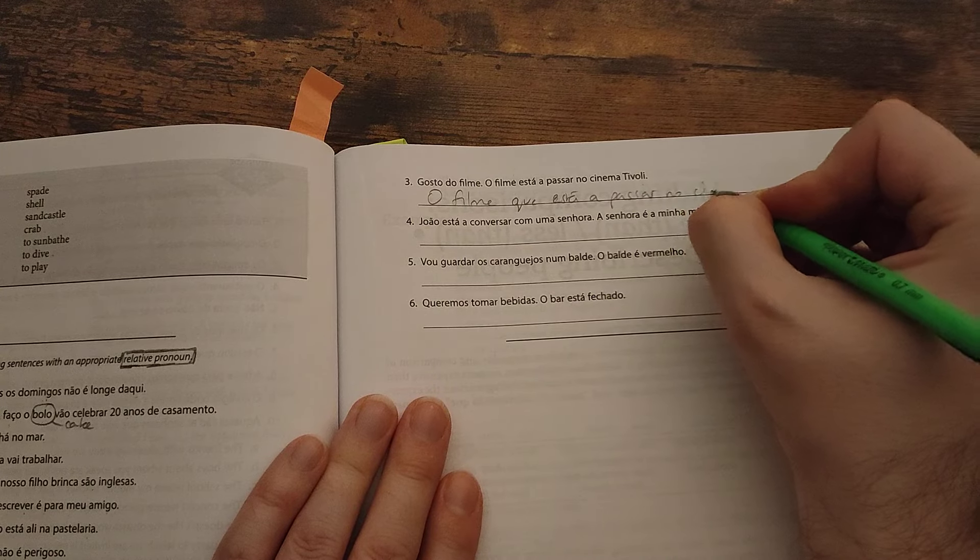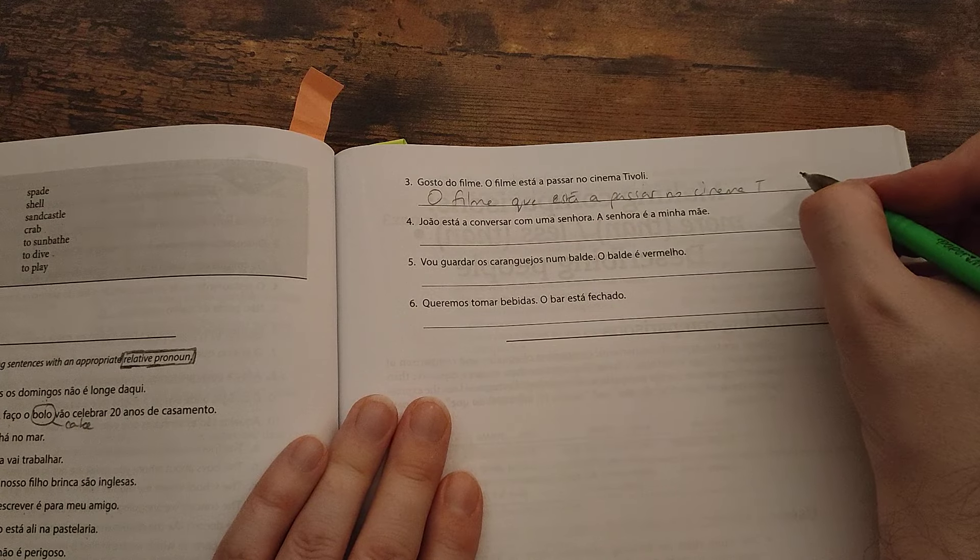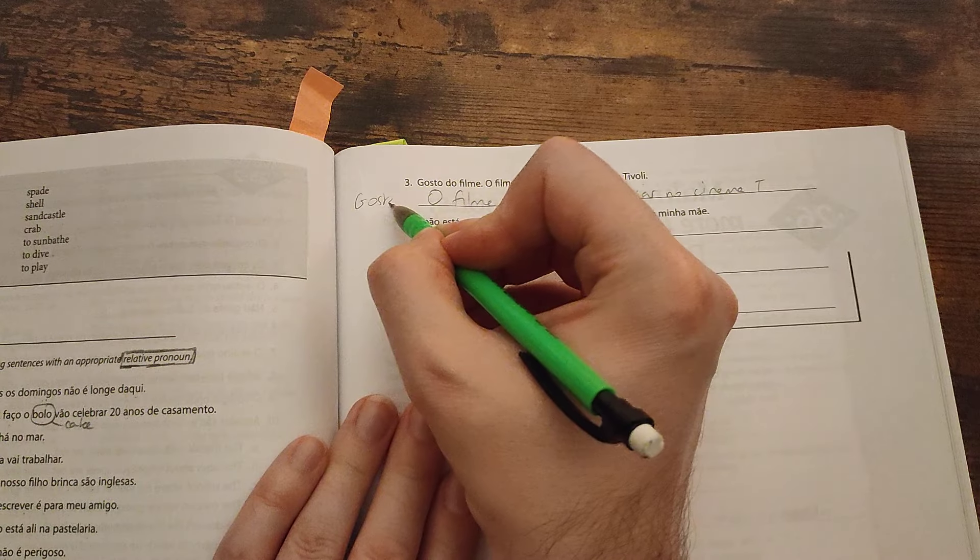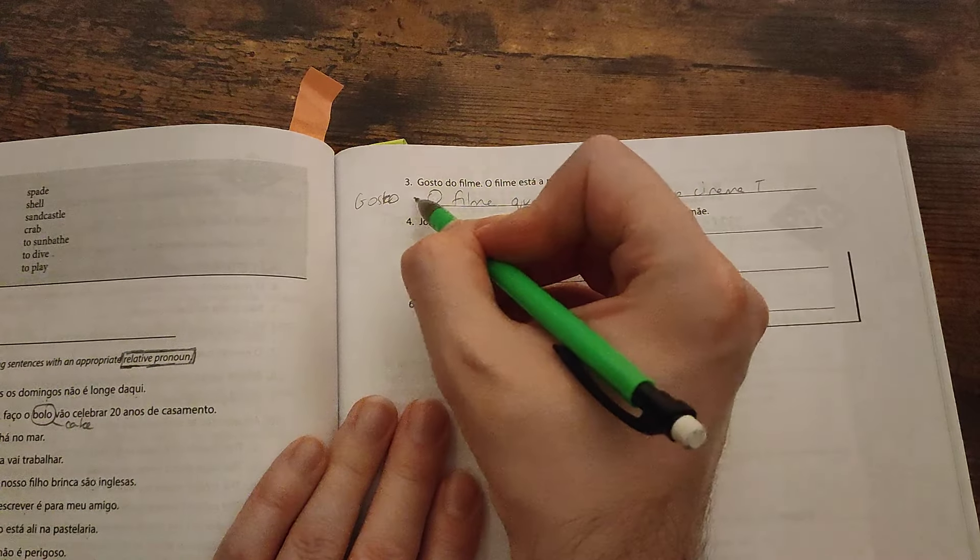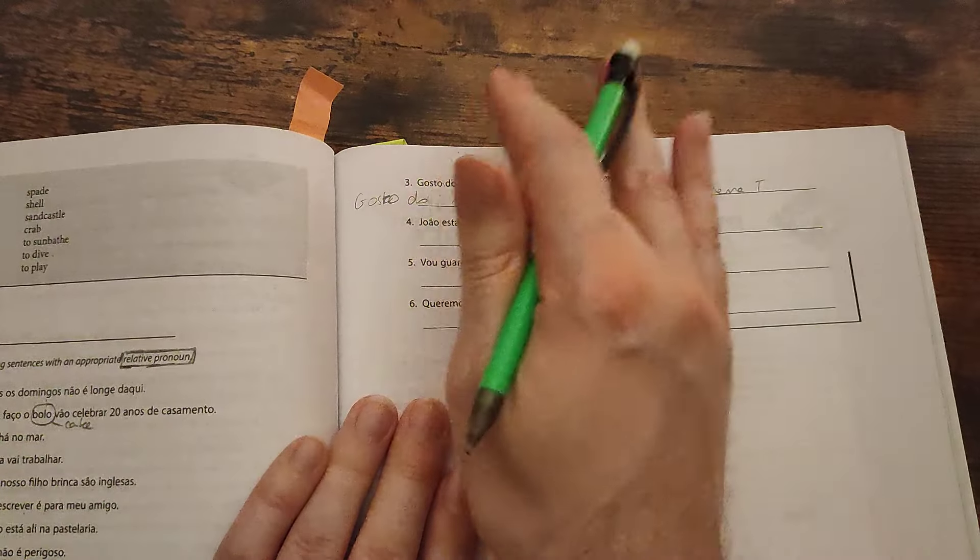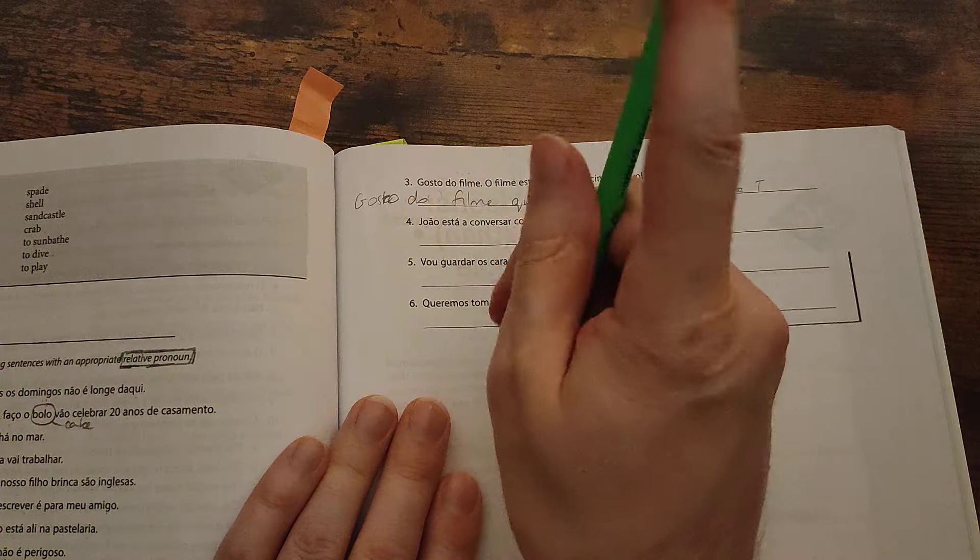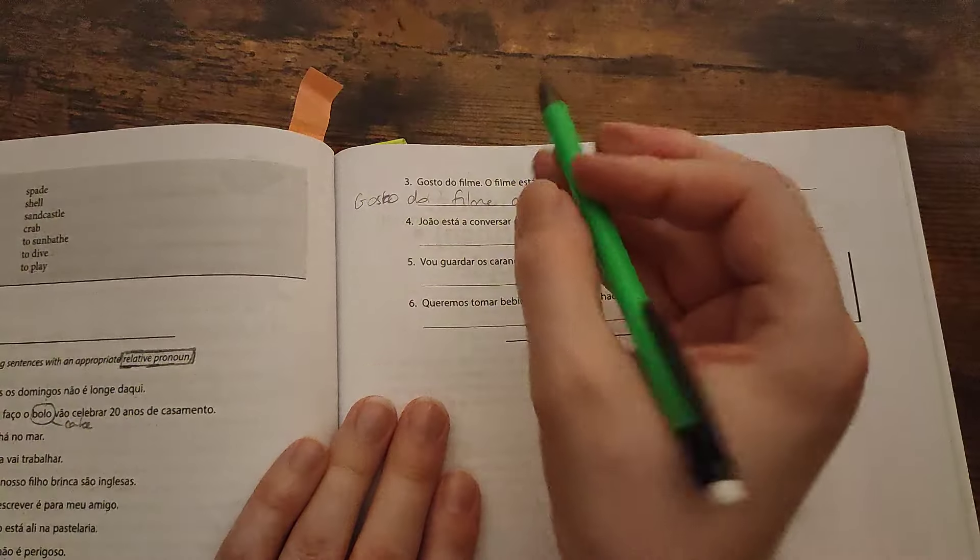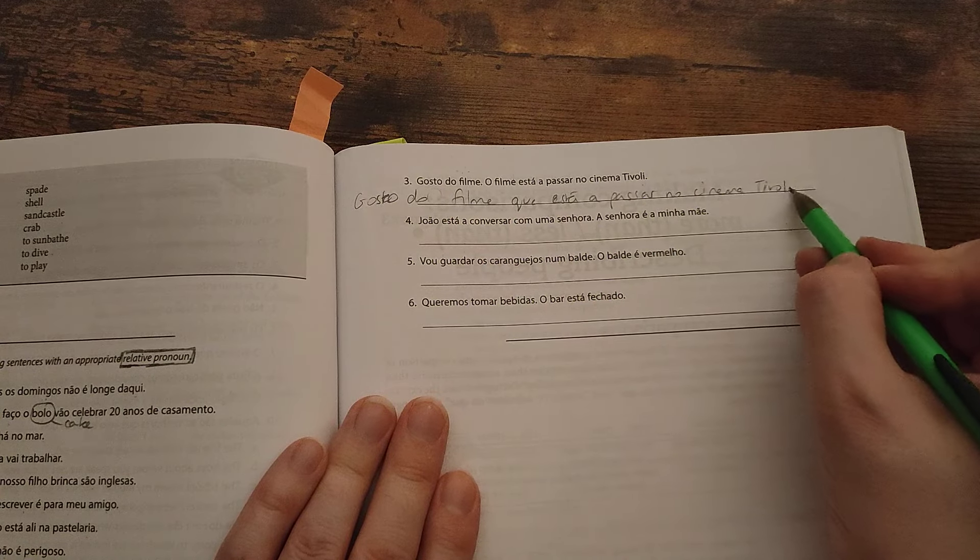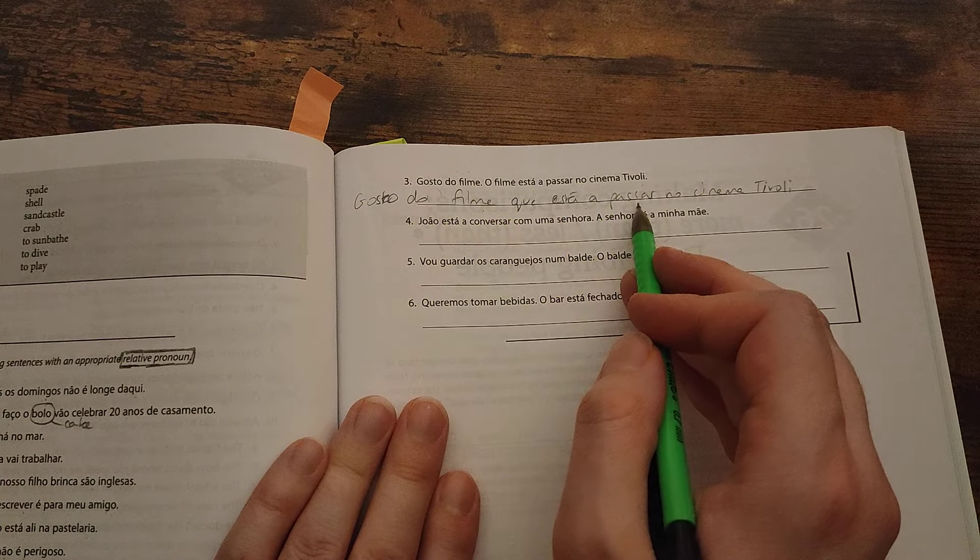O filme que está a passar no cinema Tivoli. Gosto do filme. Muito difícil, não é? Gosto do filme que está a passar no cinema Tivoli. I like the film which is being shown in the Tivoli cinema.